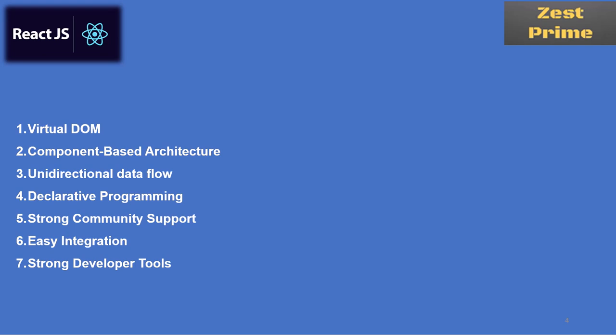The fourth point is declarative programming. Declarative programming means the way we write code is very comprehensive — anybody can understand it easily by reading the code. This makes it easier for other people to understand code written by someone else.